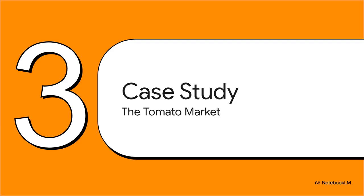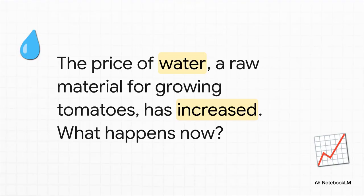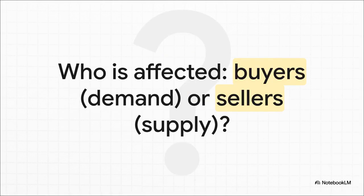Okay, so theory is great, but let's put this method to the test. We're going to apply it directly to our tomato question and see exactly how it works. All right, so here's our event, our big change. All of a sudden, it costs farmers more money to water their tomato plants. And of course, water is a key raw material for growing them. So now we're at step two of our method.